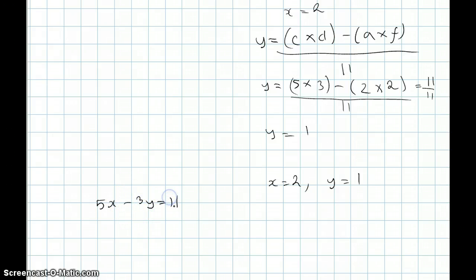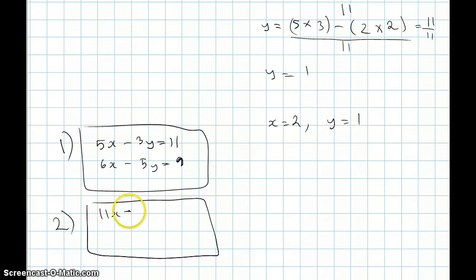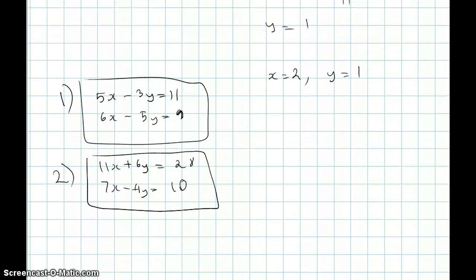So, 5x minus 3y equals 11, 6x minus 5y equals 9. And this is one question. And another question can be, 11x plus 6y equals 28, 7x minus 4y equals 10. That's all in this video. And that's all in this video tutorial series for Vedic Maths. You can check all of these videos on the website and exercises and solutions as well. Thank you and bye.